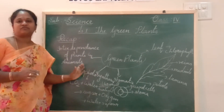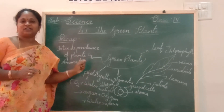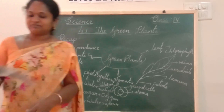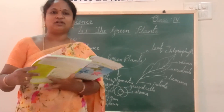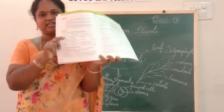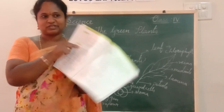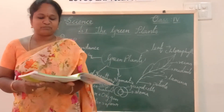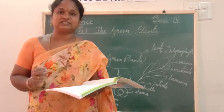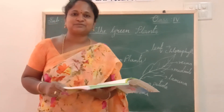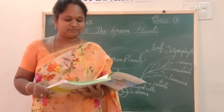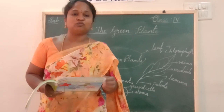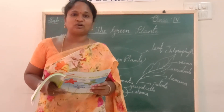This is a recap of the lesson, children. I hope you all understood. Let me ask you a few questions, and afterwards you can try to solve all the questions in your textbook. The midrib branches into small structures — what are those structures called? Veins. Very good. And next — the green color pigment which is present in the leaves is called as?